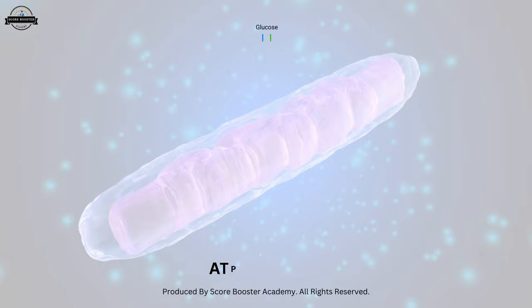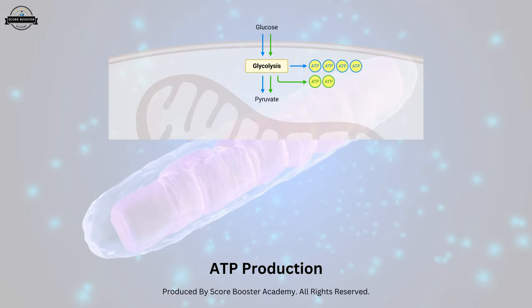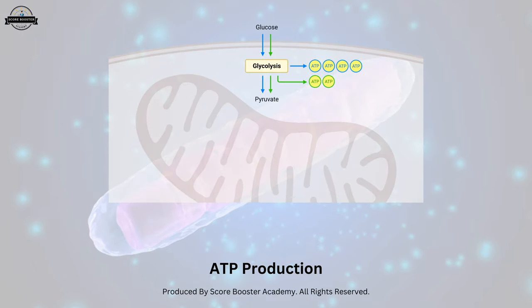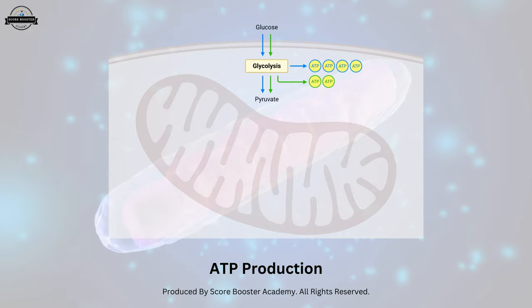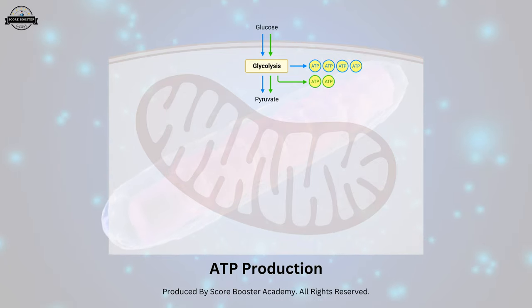The process begins in the cytoplasm with glycolysis, where glucose is broken down into pyruvate molecules, releasing a small amount of ATP.